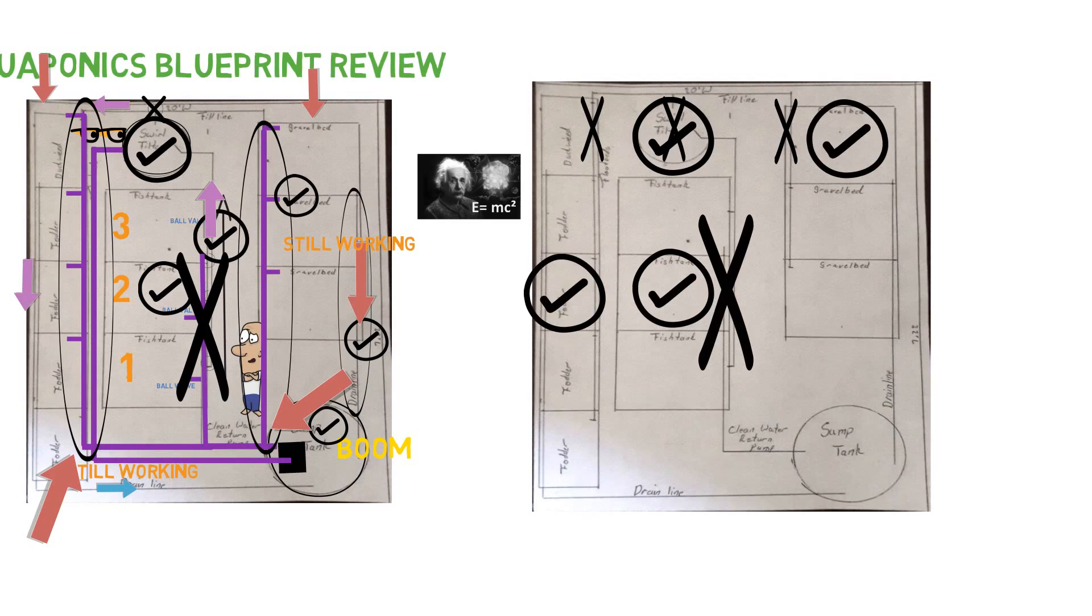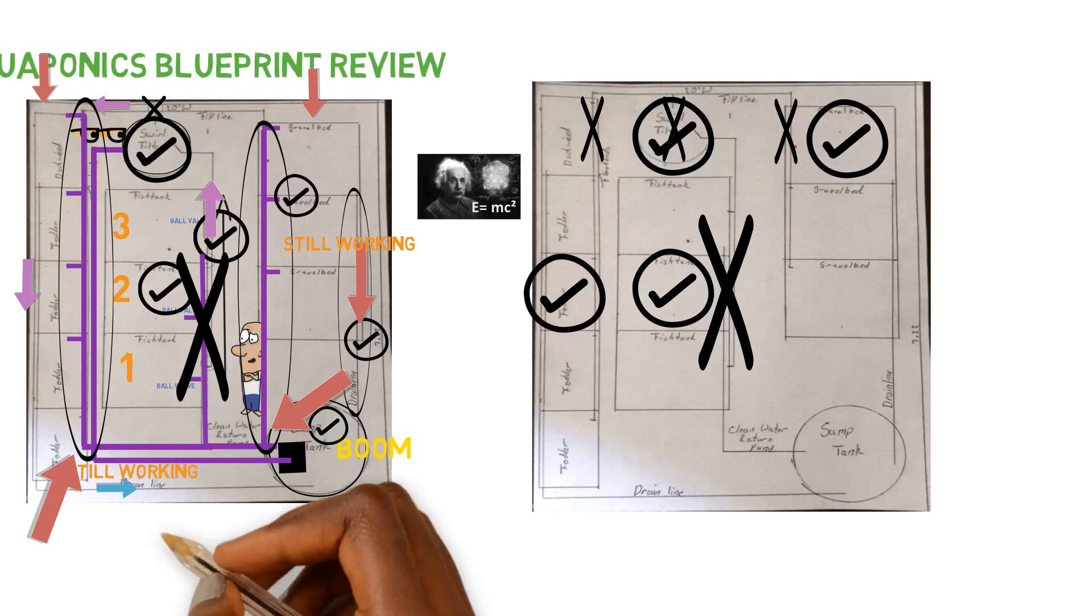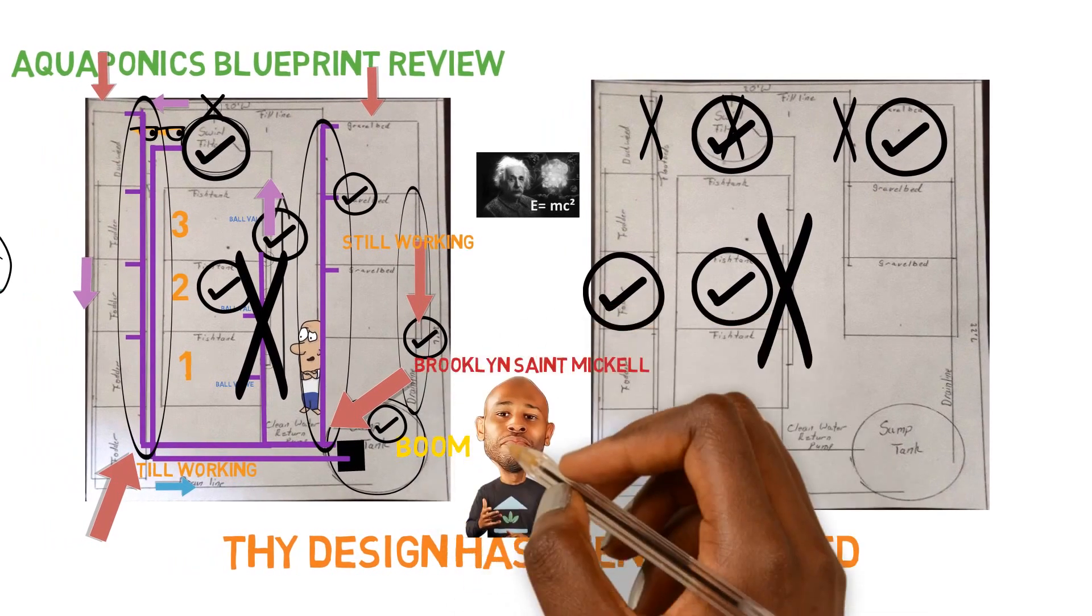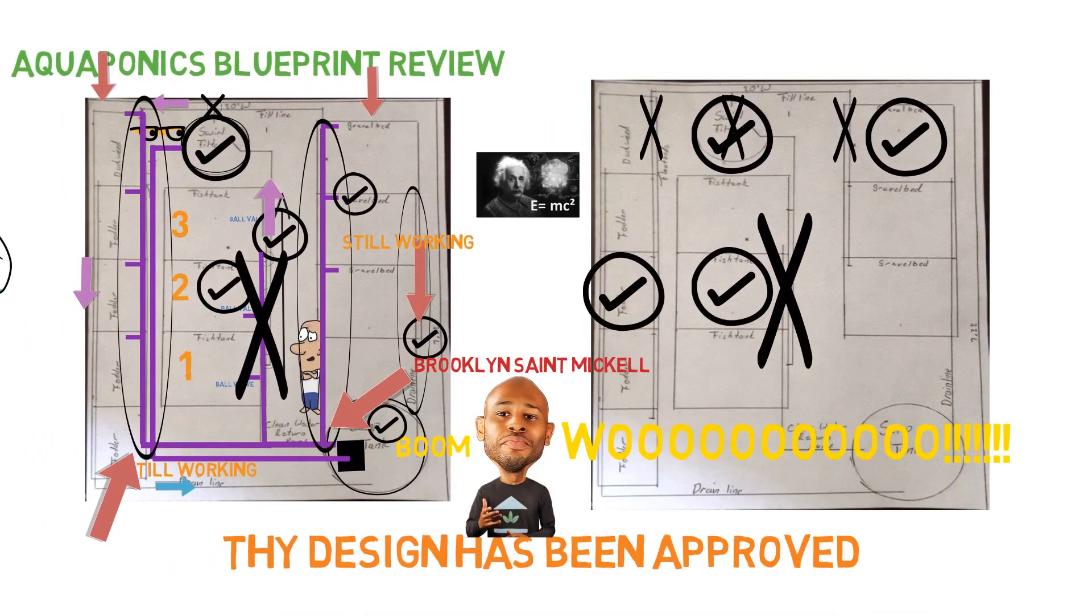even though this would work and this is a pretty decent design. It's a pretty decent design. I see what you're doing. We just had to make sure all these things are correctly sized in here for this to work efficiently. But overall, it's a good job. Thy design has been approved. So, all you need to do is get building and you'll be one step closer to becoming an aquaponics God. This is Brooklyn St. Michael with the school of aquaponics. Woo!